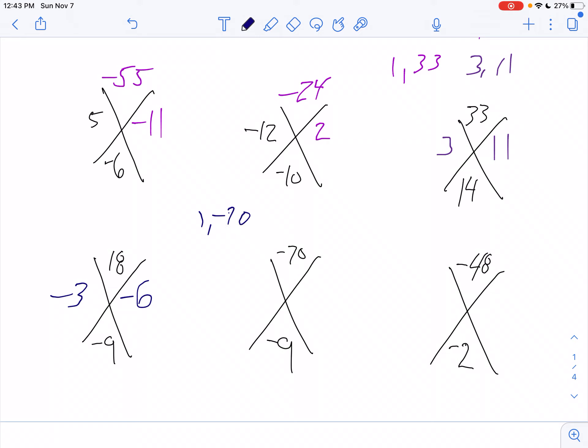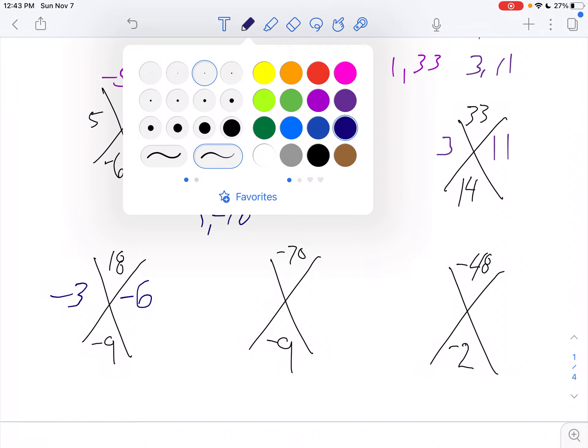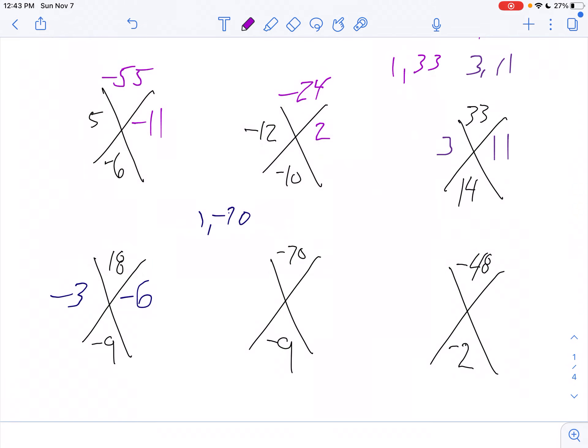But, I'm going to go 1 and negative 70. Well, that's negative 69. That's way too, that's not negative 9, is it? Then, I'll go 2 and negative 35. Well, that gives me negative 33. Not there yet. Does 3 go into 70? 3 does not go into 70 because it's a decimal. So, let's try 4. Oh, but 4 doesn't go into it either. I'm sorry about that.